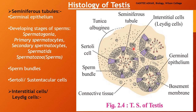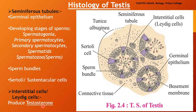Now let us come back to the interstitial cells or Leydig cells. These cells are endocrine in function. They produce the male hormone known as testosterone. Testosterone is the hormone responsible for producing the secondary sexual characters of the male.